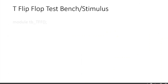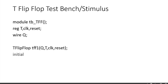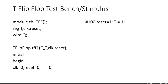Now let us write down the test bench for the T flip-flop. Declare all inputs as register type and outputs as wire type, then instantiate the flip-flop. Within the initial begin block, initialize the clock, make reset equal to 0, and set T to 0 as well. After 100 time units, make reset high so it works as a T flip-flop. Then change the T value after certain delays and verify whether the output matches the truth table.